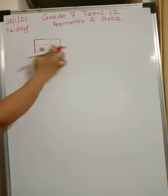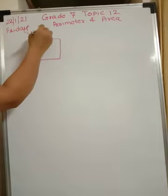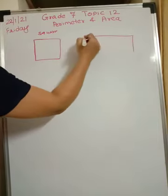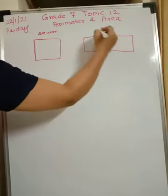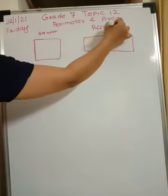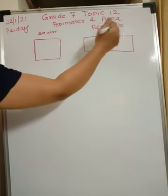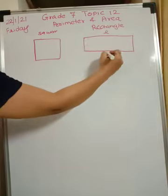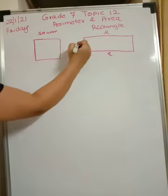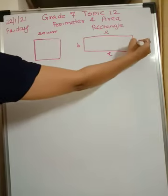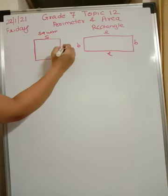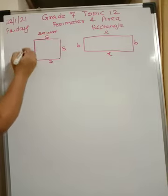If all sides are equal and all angles are right, then this is nothing but a square. And I'm taking another — this is a freehand drawing — and this is a rectangle. This is called length, and opposite sides are equal in a rectangle, so the other side is also length. Breadth and breadth are the same on the other two sides. In case of a square, all sides are equal, so if one side is s, all four sides will be s.